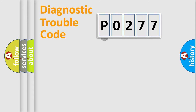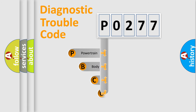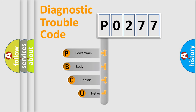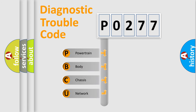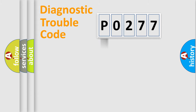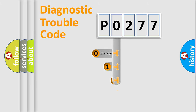First, let's look at the history of diagnostic fault code composition according to the OBD2 protocol. We divide the electric system of an automobile into four basic units: powertrain, body, chassis, and network. This distribution is defined in the first character of the code.